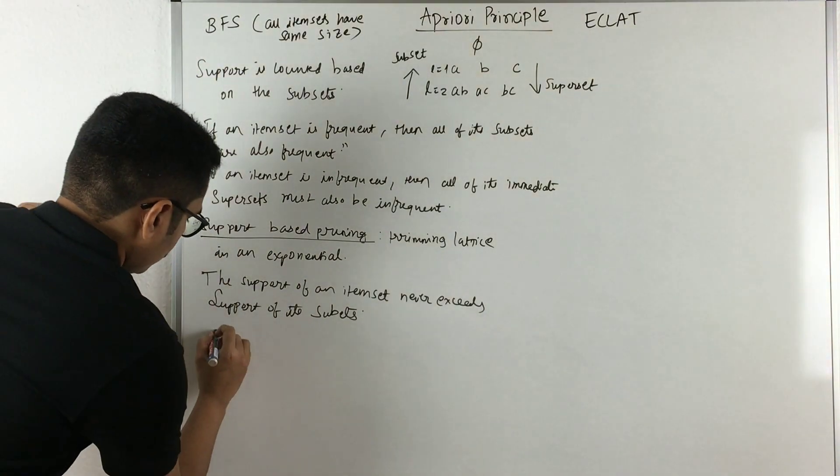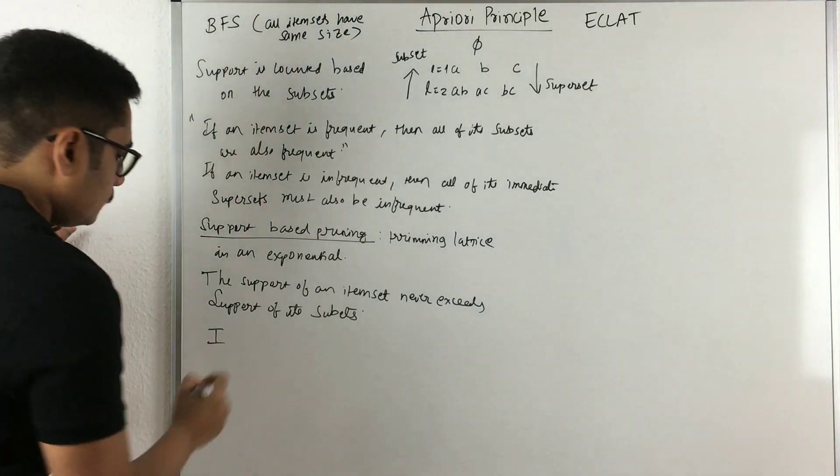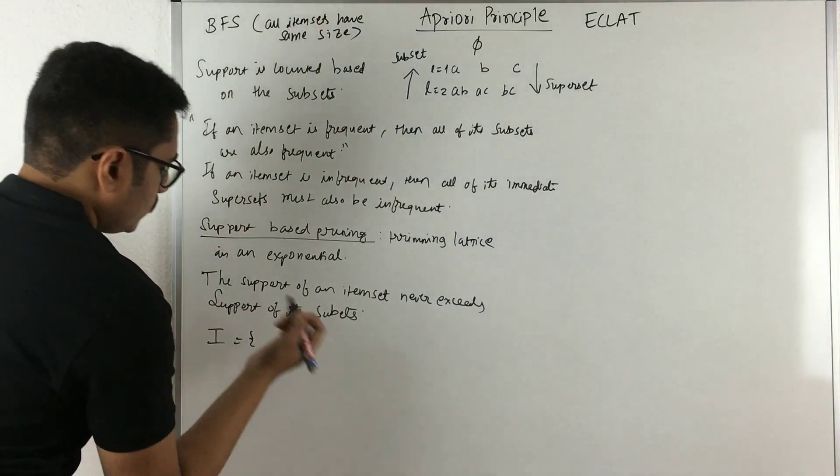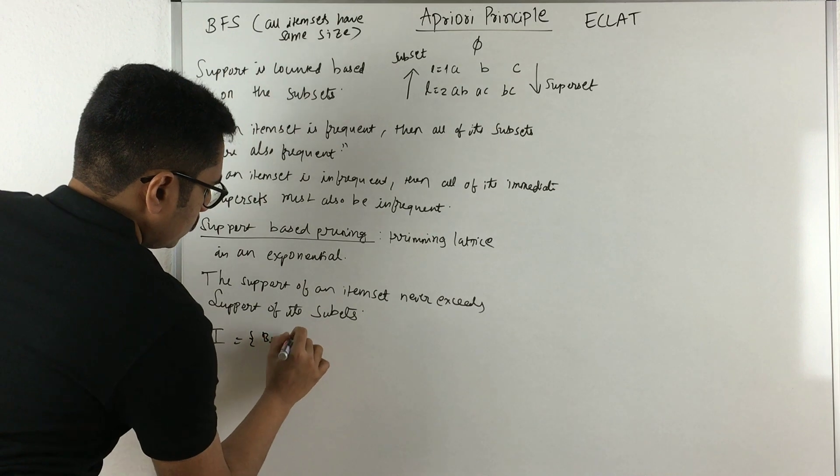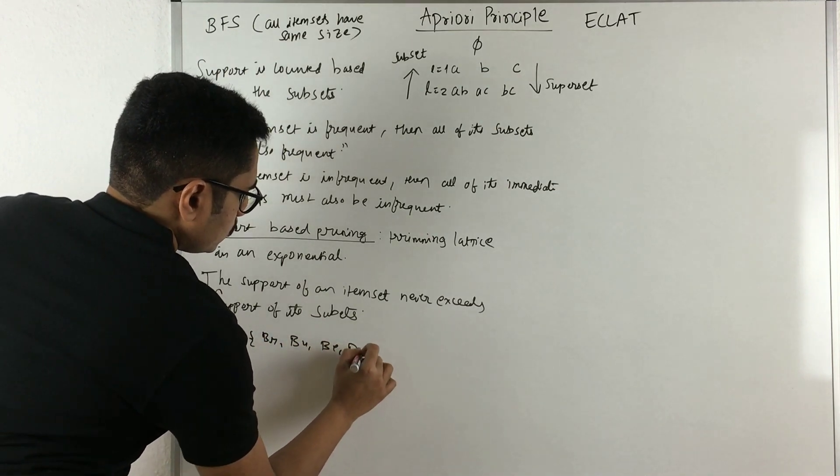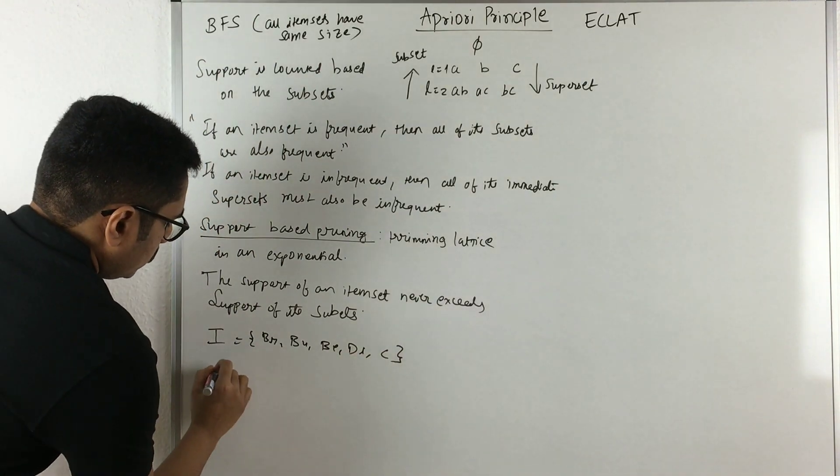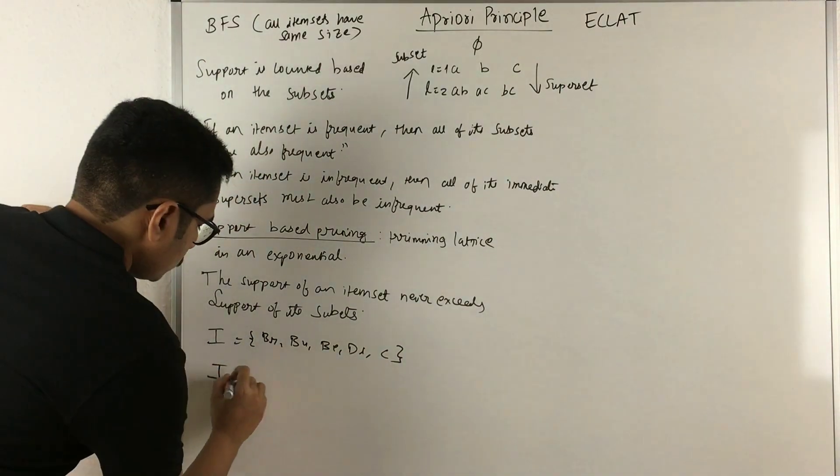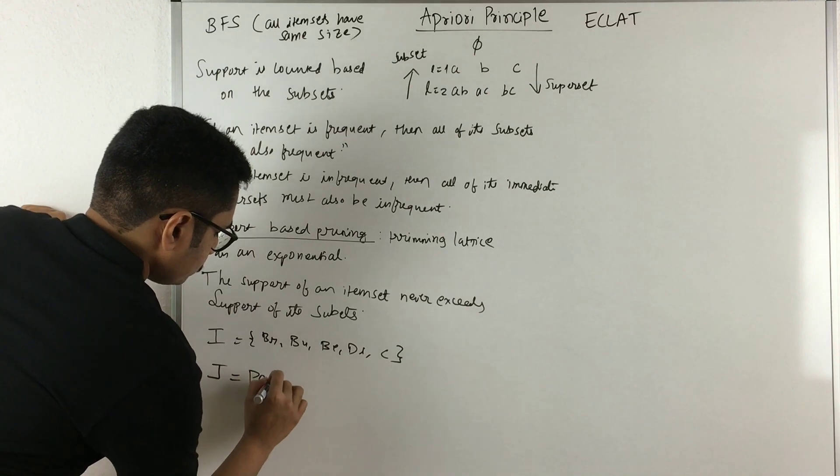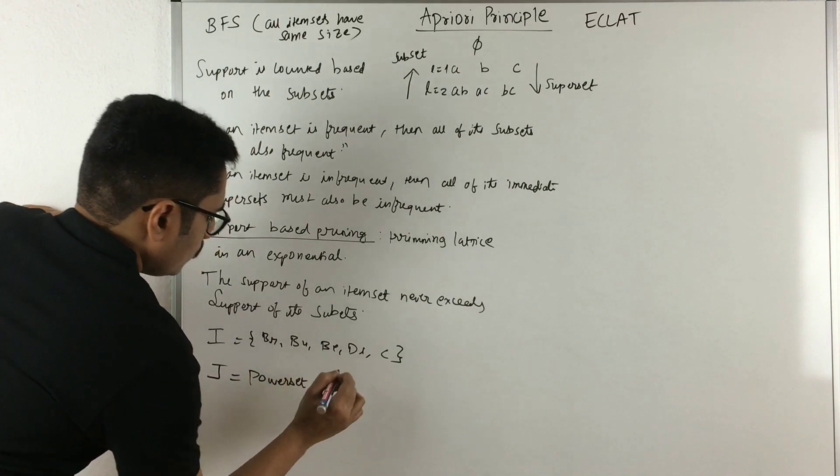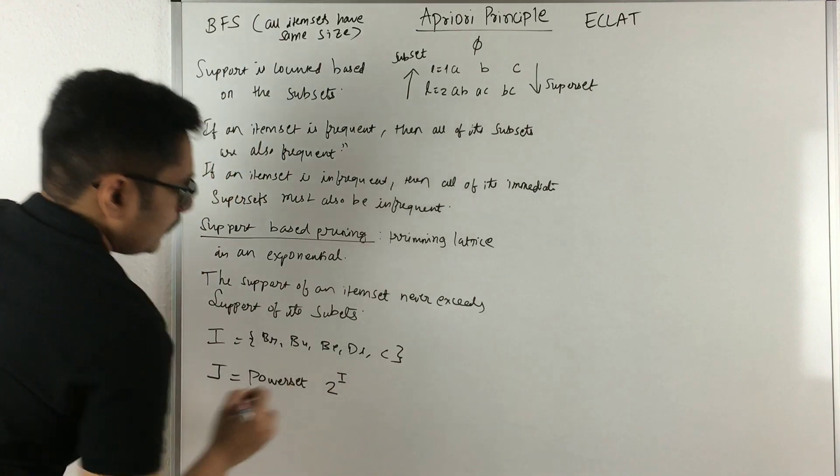Now, see, I is a particular item set containing certain types of items like bread, butter, beers, diapers, cola, etc.